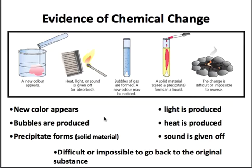Heat, light, or sound is given off or absorbed. For example, hand warmers — those things you buy during the holidays — actually contain two chemicals, and when you pop them the chemicals react and produce heat, so that's a chemical change. Bubbles or gas being formed is another indicator — mixing baking soda and vinegar is a great example; if you get fizzing or bubbling, that's a really good sign of a chemical change. A solid forming from two liquids — called a precipitate — is also evidence of a chemical change.